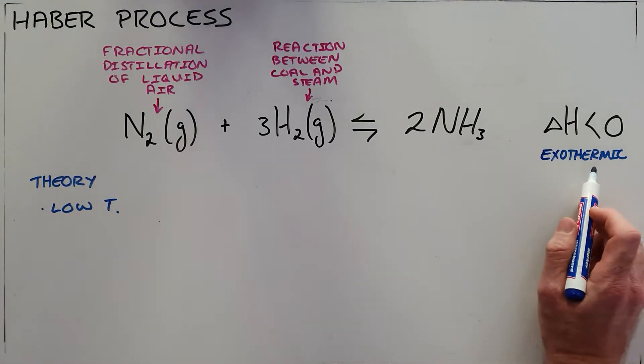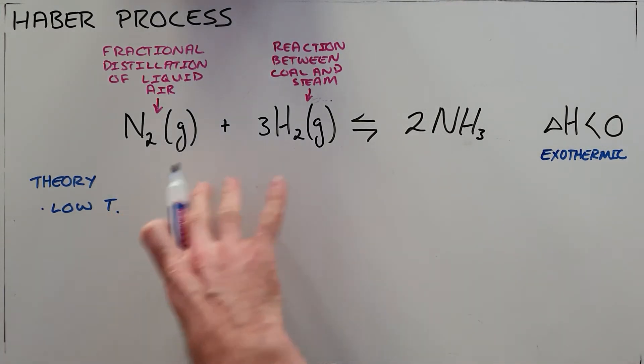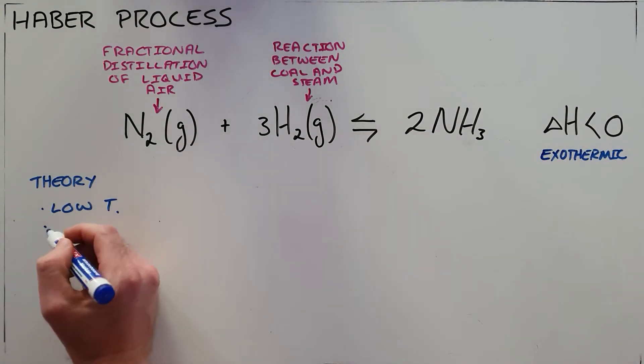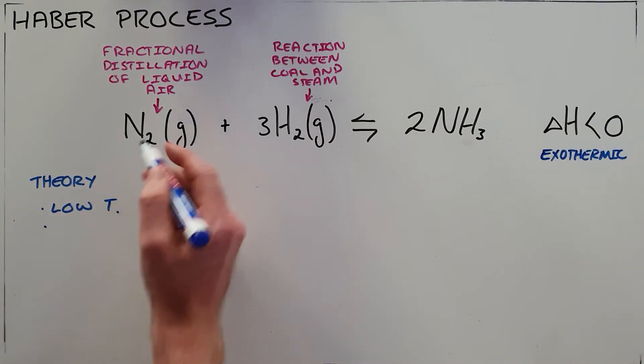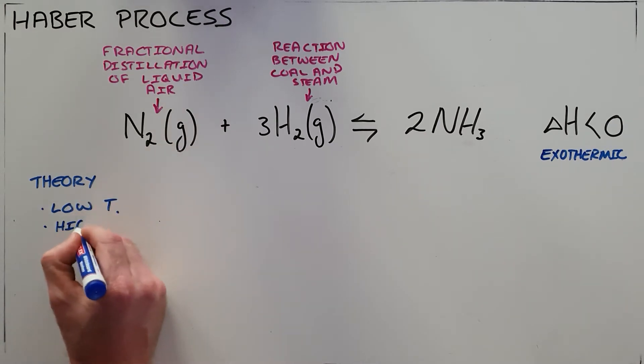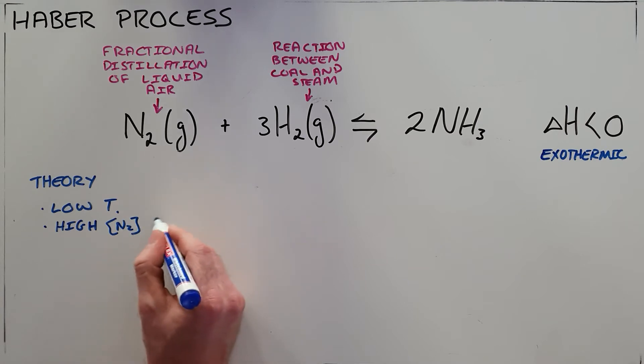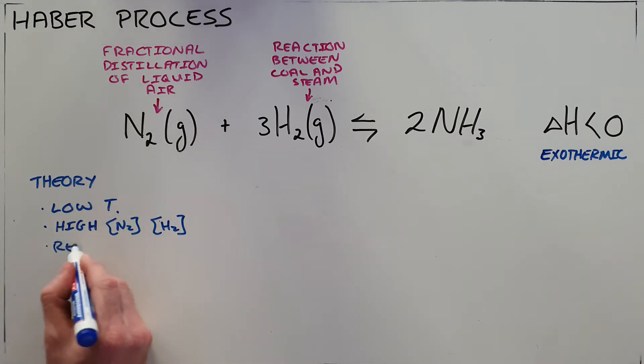The second thing we would try to do is maintain high concentrations of our reactants, those being nitrogen and hydrogen, and we would constantly remove the ammonia that is produced.